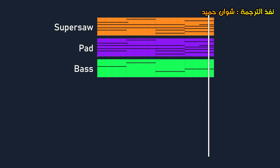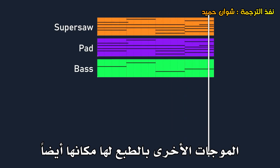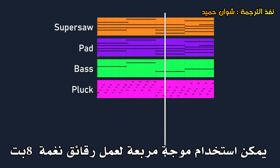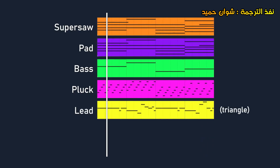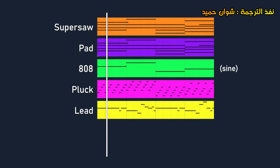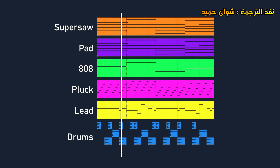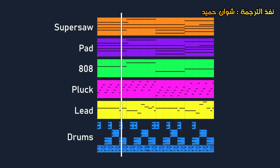All together, they sound like this. The other waves of course also have their place. For example, a square wave could be used to make 8-bit chiptune sounds. A triangle wave could also be used to make some unique lead sounds. And lastly, a distorted sine wave can be used to make an 808. So that was some of the basic math behind music and sound synthesis, which hopefully can now give you a fresh perspective when encountering music and instruments. Hope you enjoyed the video, until next time.